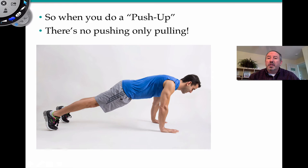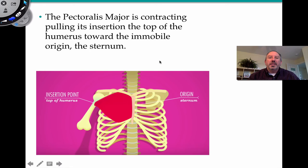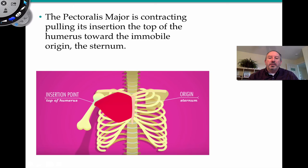Something a little odd: when you're doing a push-up, it's really not pushing. Muscles aren't capable of pushing — they're really only capable of pulling. What's happening is the pectoralis major, this large muscle in the chest, when contracting, is pulling its insertion — the top of the humerus — toward the immobile origin at the sternum. That's actually what causes the pull, which allows you to be lifted in a push-up.